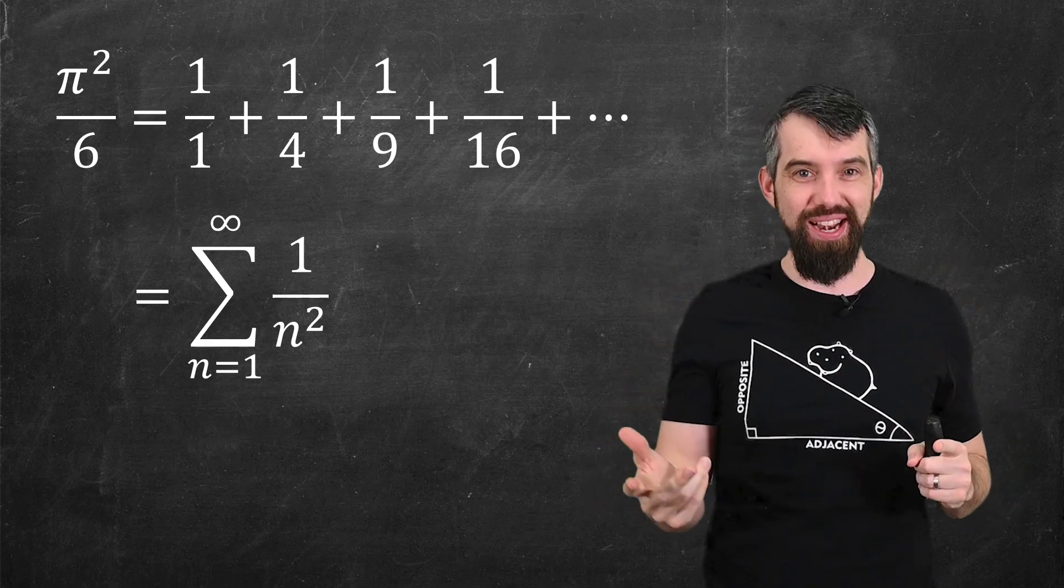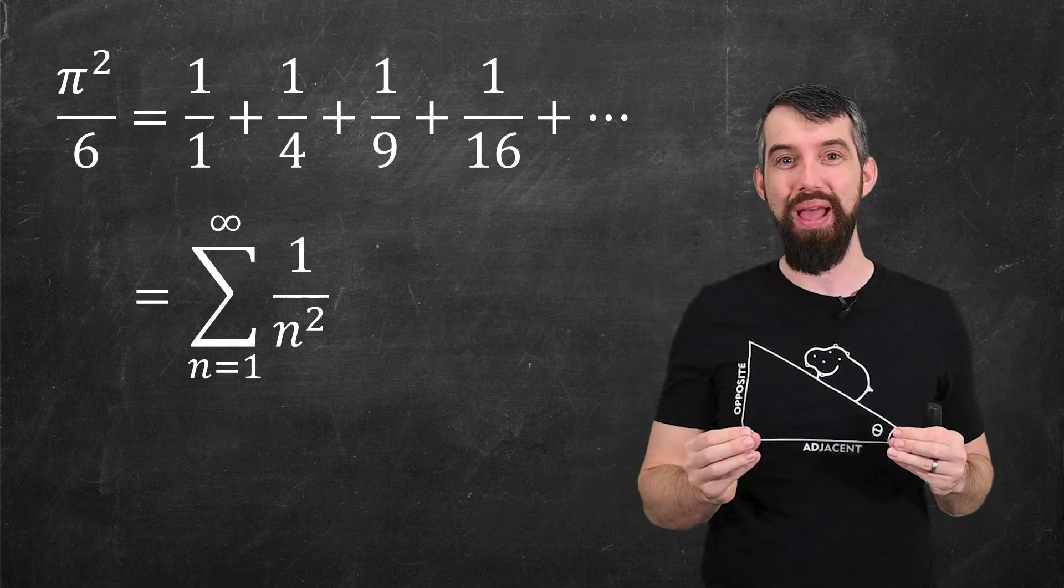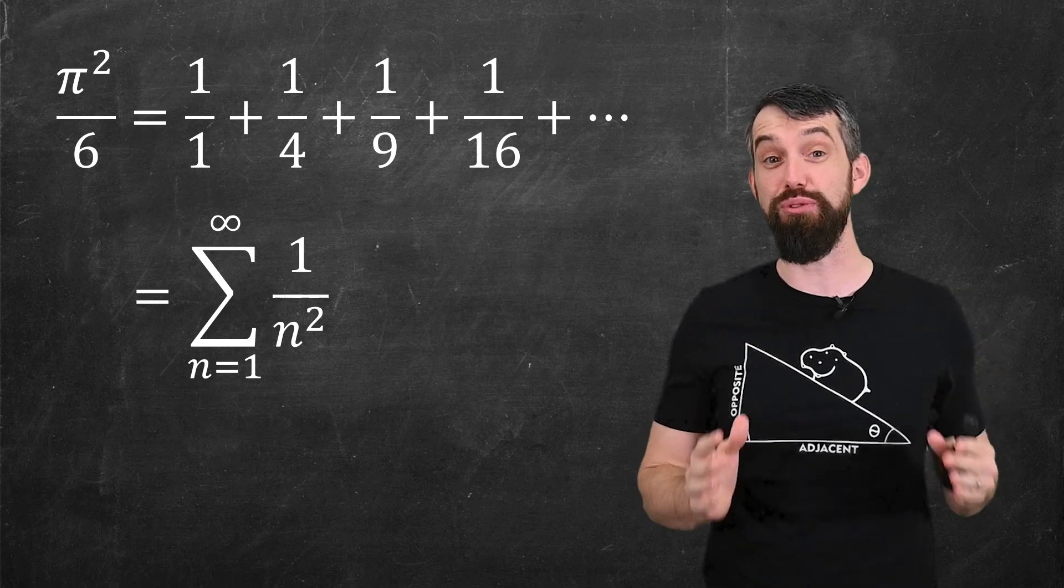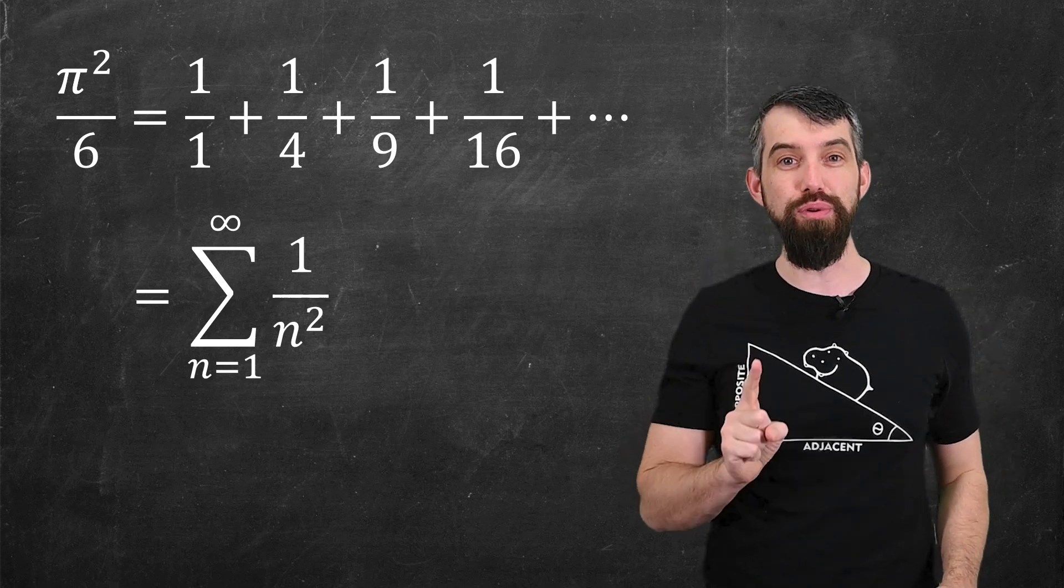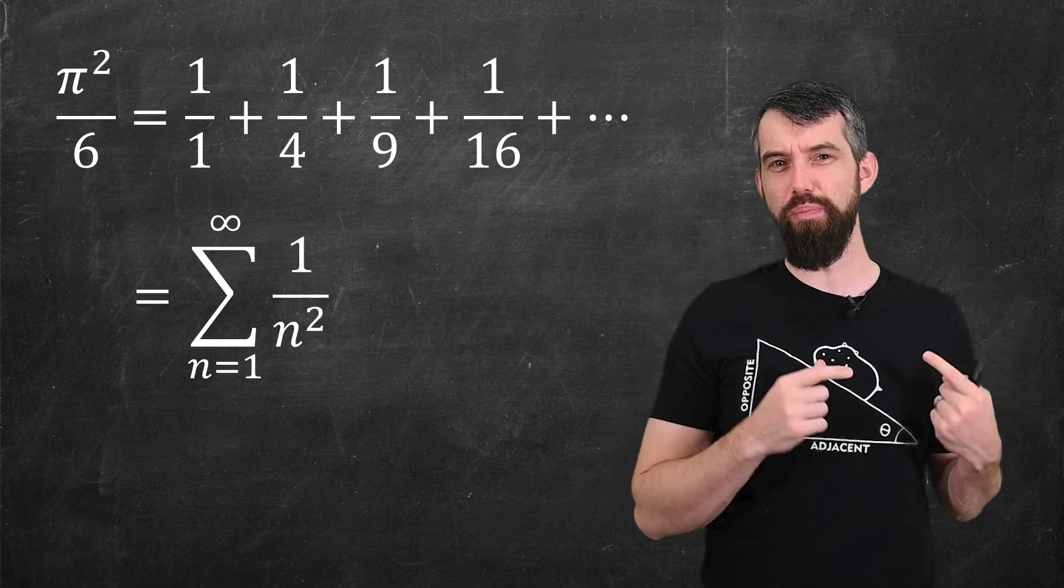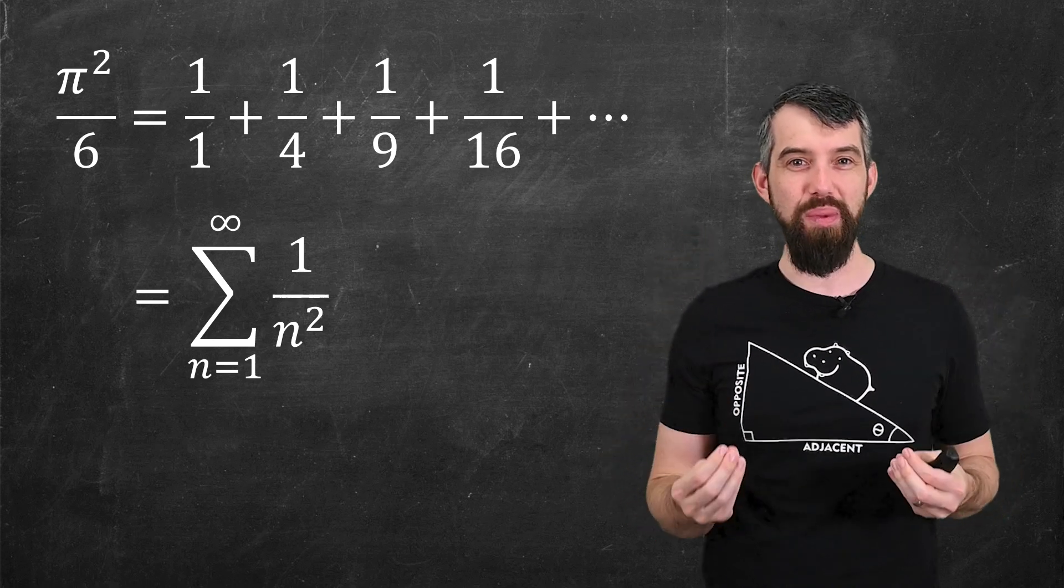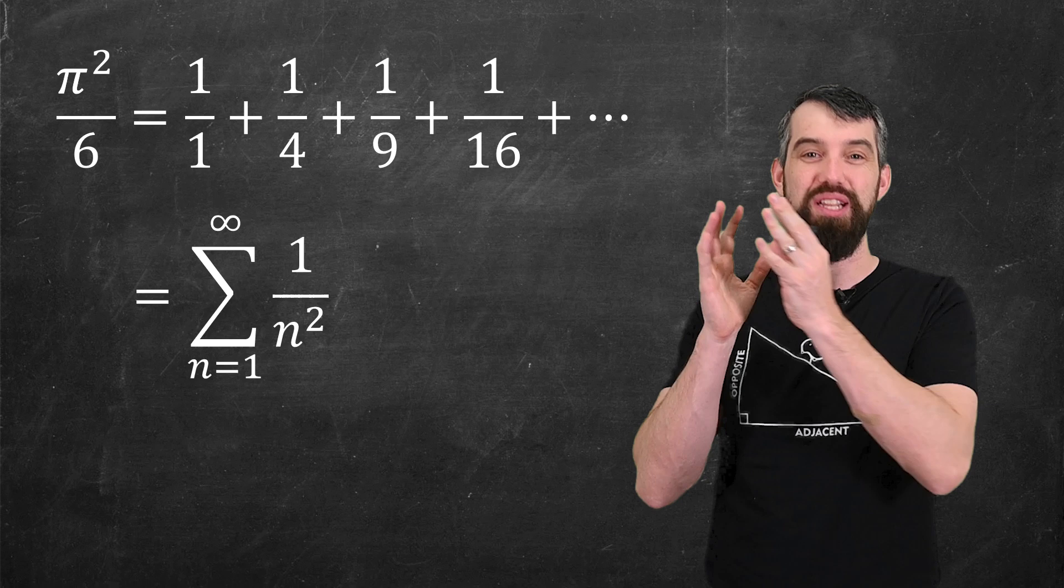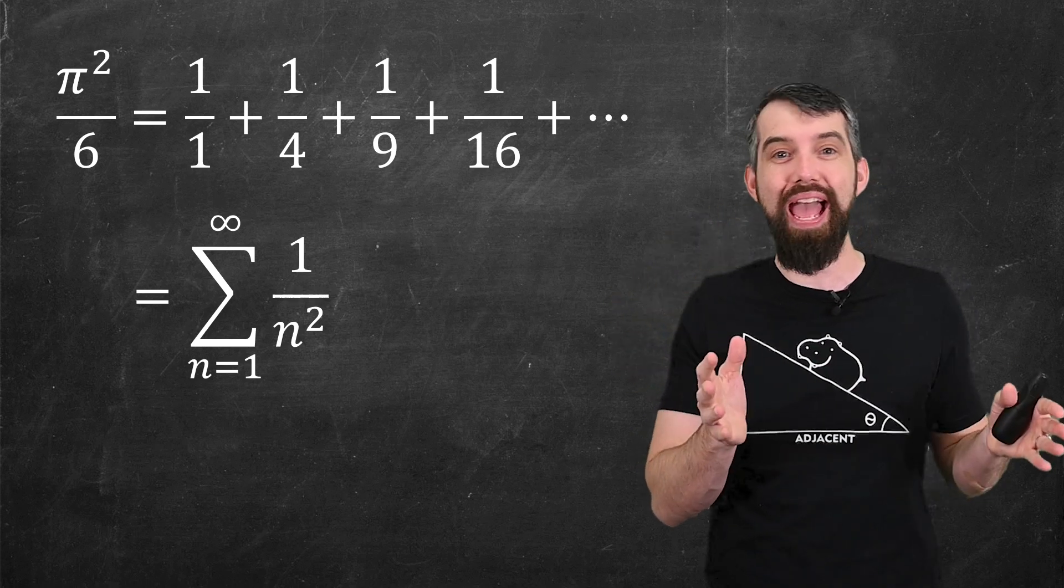This cool identity, sometimes referred to as the Basel problem, has a whole bunch of really interesting proofs. In this video, I'm going to show you how to prove it using the big tool of Fourier series. Before we jump into it, I just wanted to comment that it's really nice to have an expression for pi that can be written as